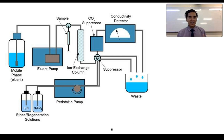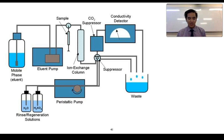We then inject our sample at a certain location. Ions of interest in our sample will exchange places and adsorb to the stationary phase to varying degrees. The rate of this movement depends on the type, the magnitude of charge, the distribution of charge, and what we call the charge density.